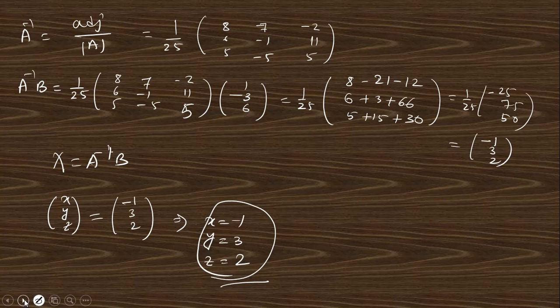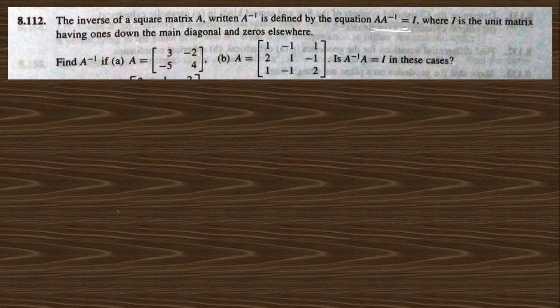Moving to question 8.113. The inverse of a square matrix A, written as A⁻¹, is defined by AA⁻¹ = I, where I is the identity matrix — ones on the main diagonal and zeros elsewhere. The question asks us to find A⁻¹ for given matrices and determine if it is possible.